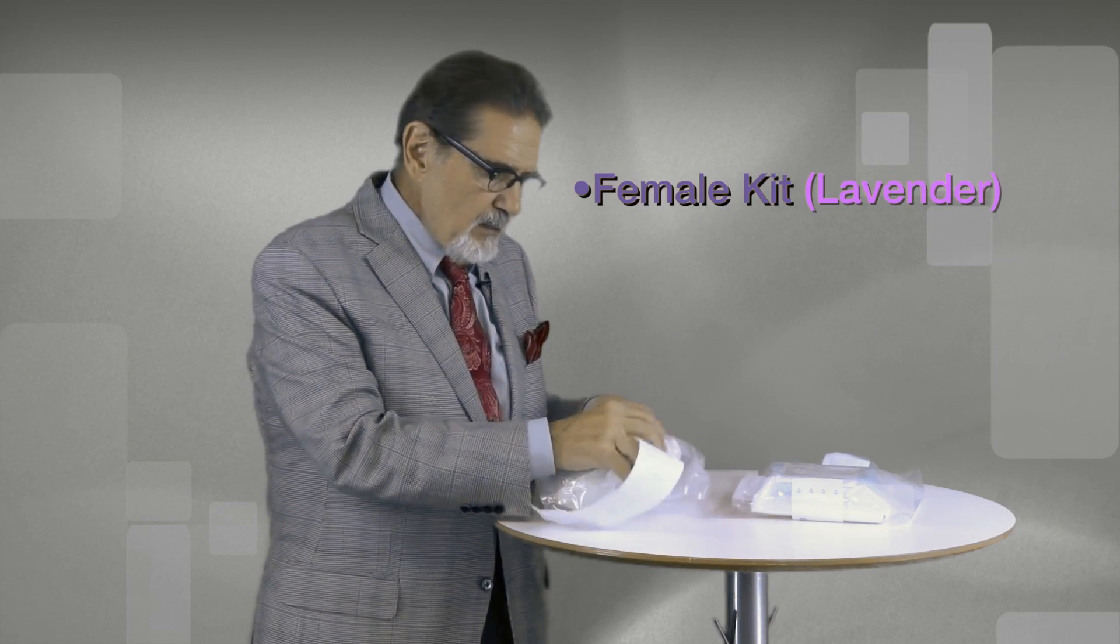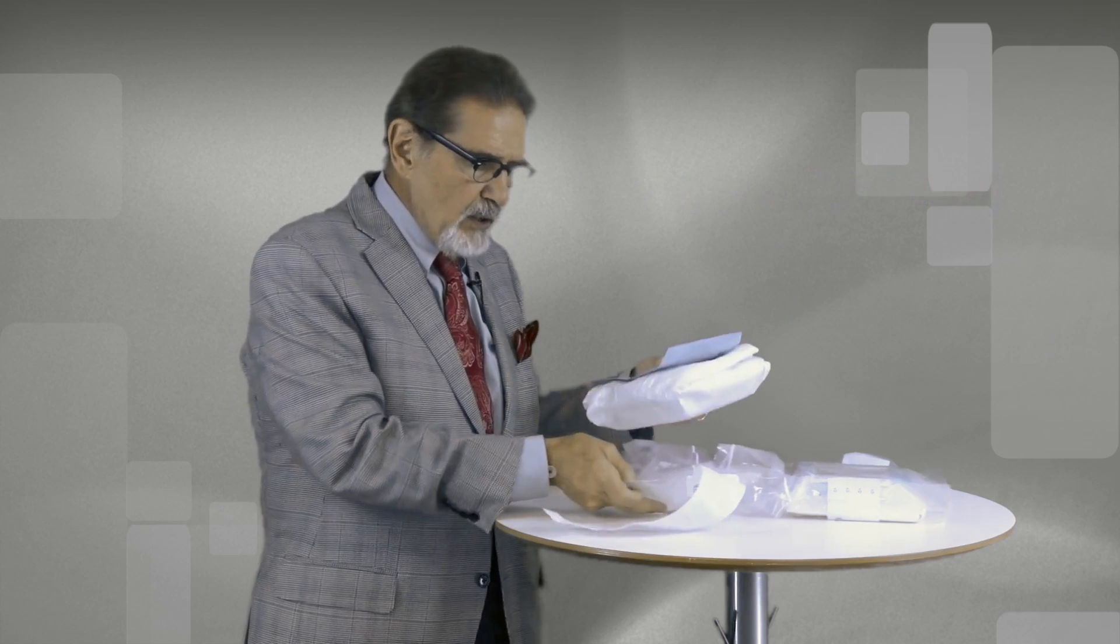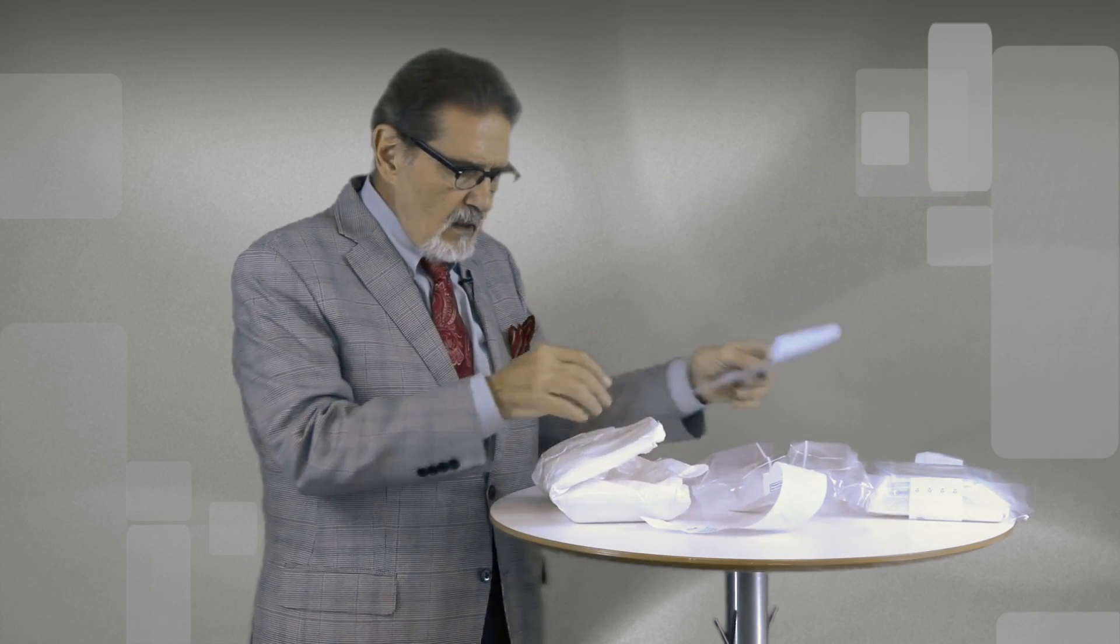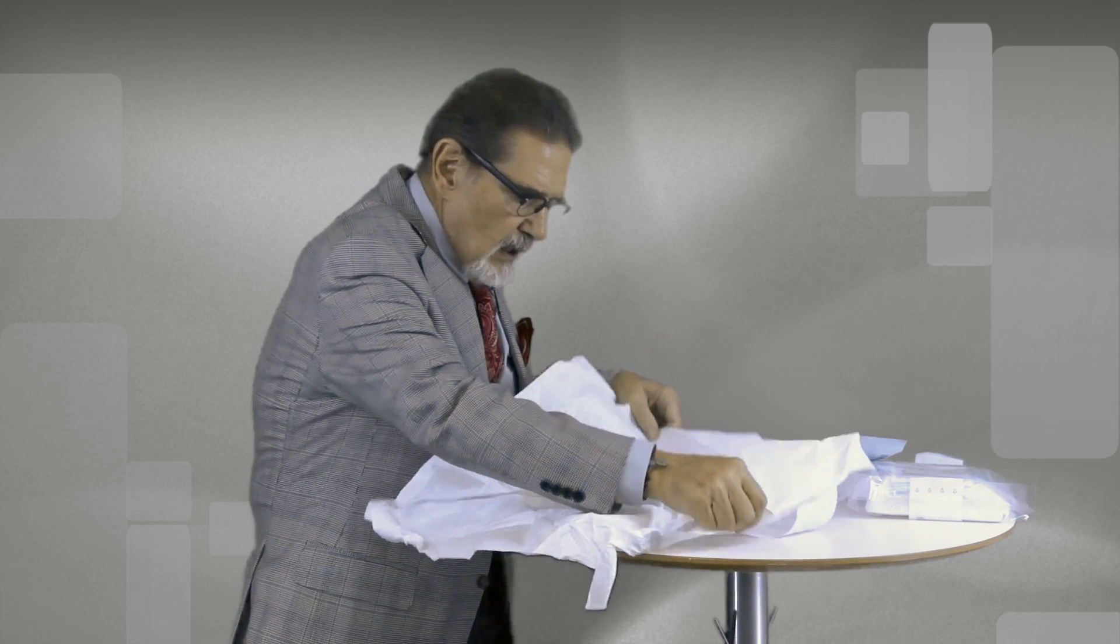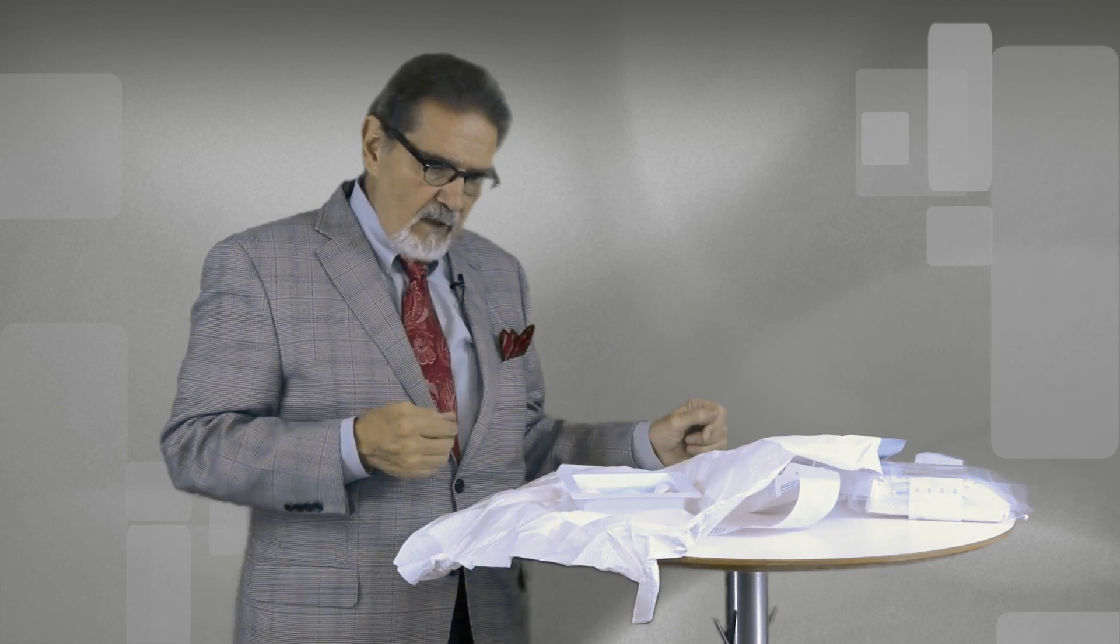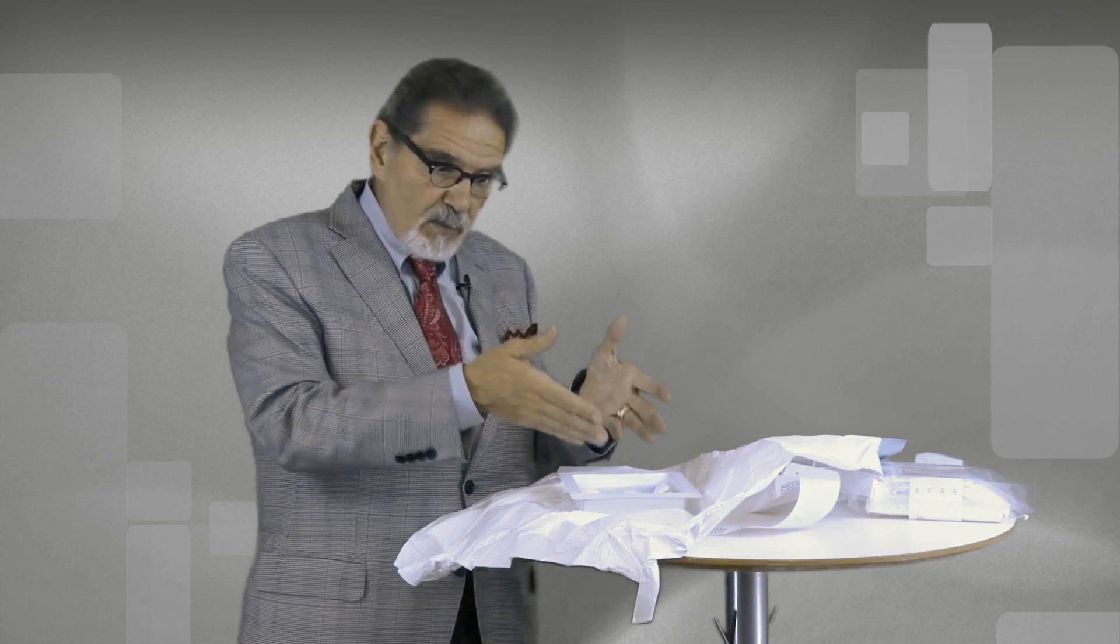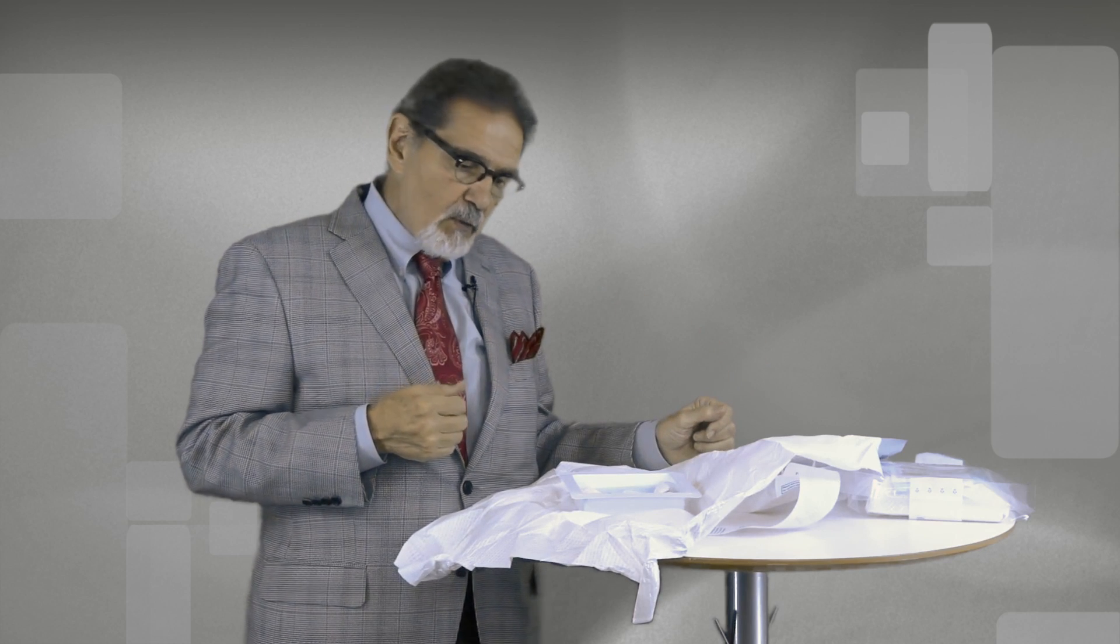As we open up the pack, I'll do the female because the male is very close to it. So once you open the pack you now have a sterile interior. And the tray, as we empty the tray, you can place your trocar, the sterile trocar within it.